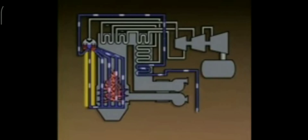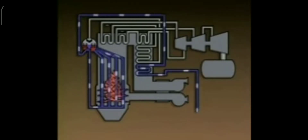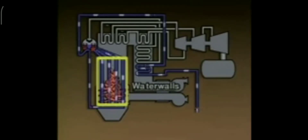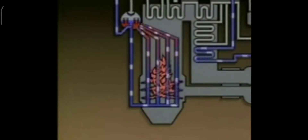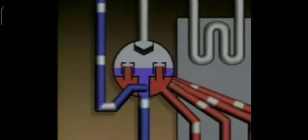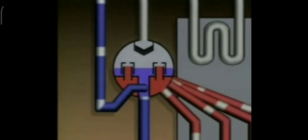A boiler typically has two or more downcomers and two or more headers; however, for clarity, this illustration shows only one of each. The lower headers supply water to the bottoms of the boiler tubes. The boiler tubes, which line the inside walls of the boiler furnace, are commonly called water walls. The water walls are exposed to the heat produced by burning fuel. As water flows up through the water walls, heat turns some of the water into steam. The mixture of water and steam rises until it enters the boiler drum, where it is separated into water and steam. The steam rises to the top of the drum, and the water remains in the bottom. The water is then available to recirculate through the boiler.